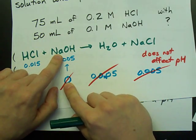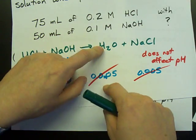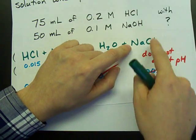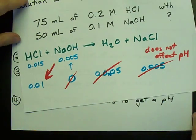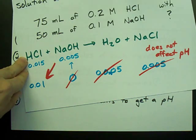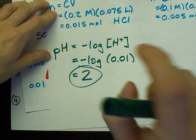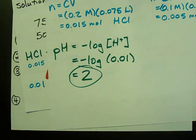Doesn't affect pH because there's none left. Doesn't affect pH because it's water. Doesn't affect pH because it's one of these loser salts that doesn't affect the pH. The only thing that does affect it is leftover HCl, and that gives me a pH of two. Best of luck.